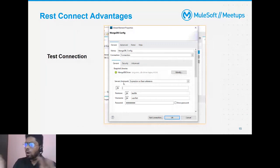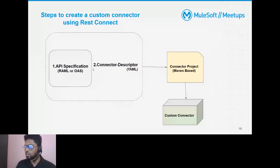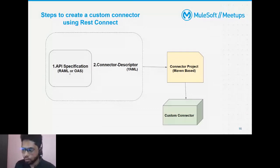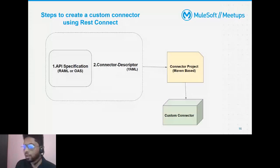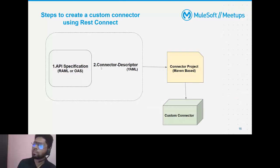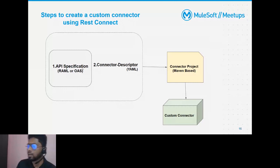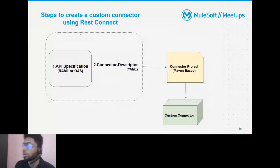Here is the overview of how to create a custom connector using REST Connect. The first step is to create an API specification using either RAML or OAS — both are supported. The second and most important step is to generate the connector descriptor from the API specification. The connector descriptor (connector.yaml) is not exclusive from the API spec — it acts as a wrap around it.